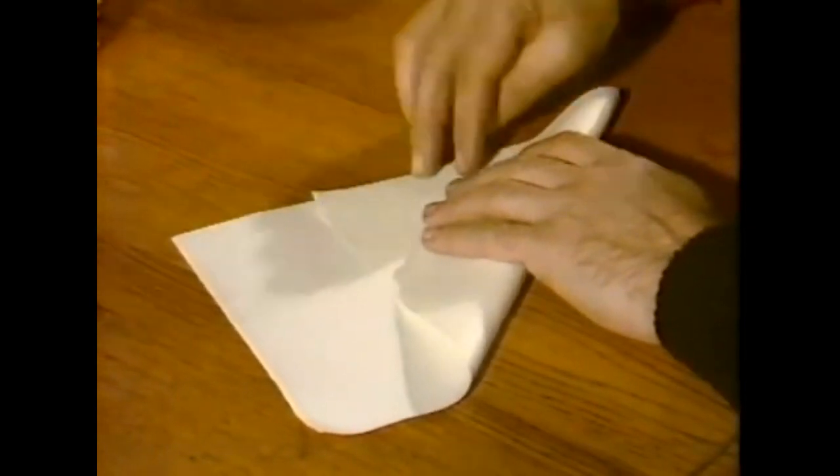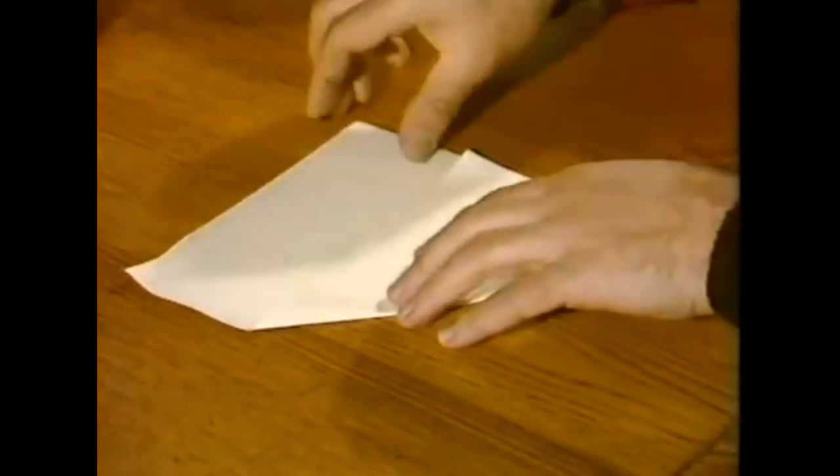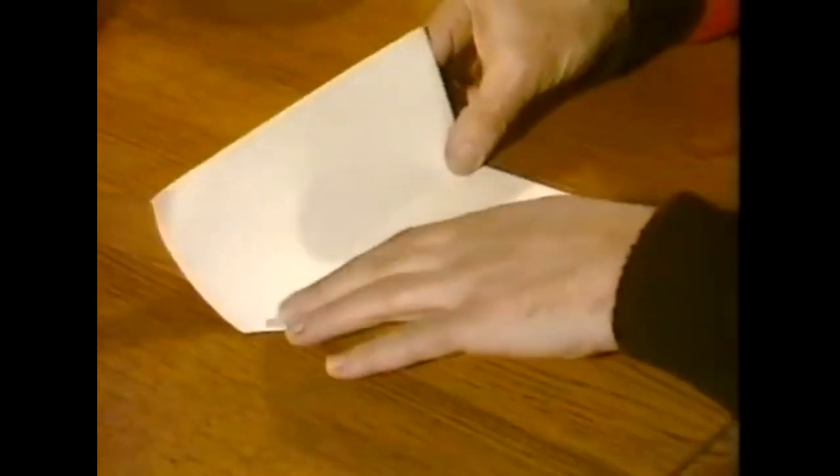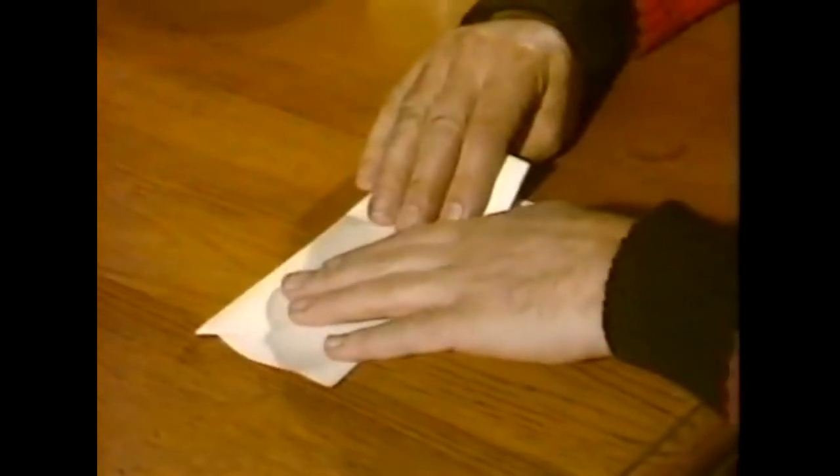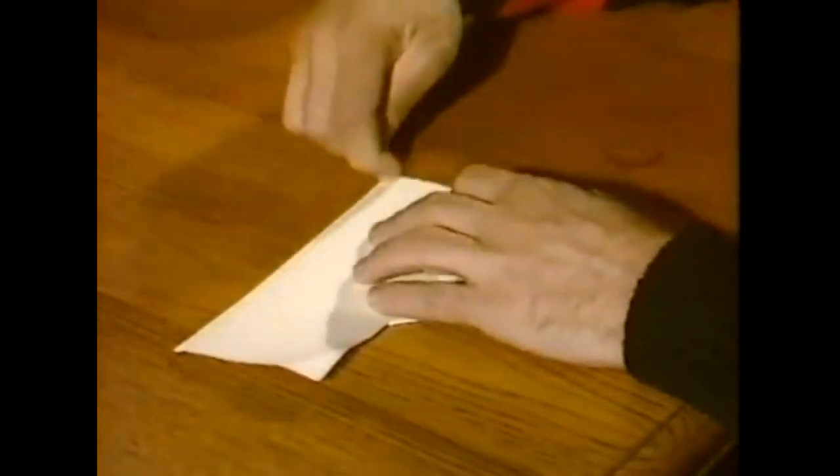Now if you crease that across like this, you'll see that you have a bit of paper left over. You can leave it on, but it's best to knock that off. So I'll do that by folding it down here, creasing that well and truly, and just as you do with your tearing paper.